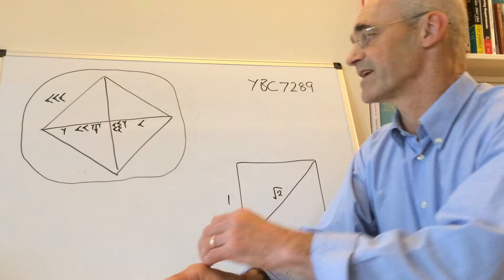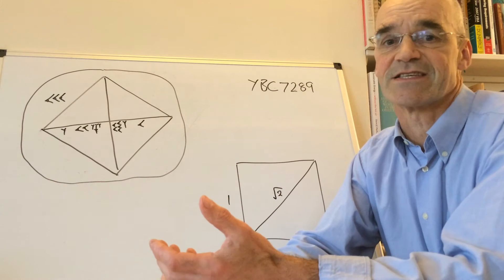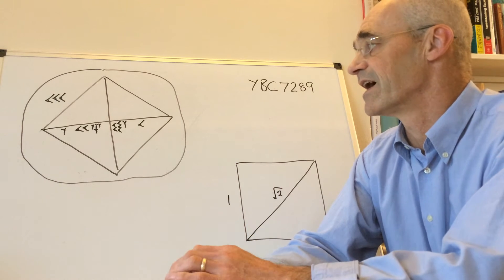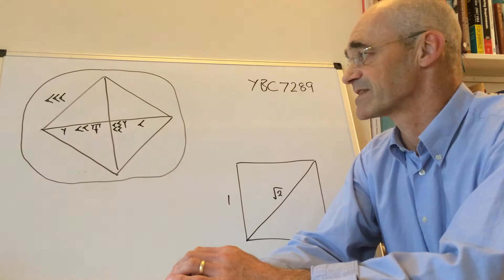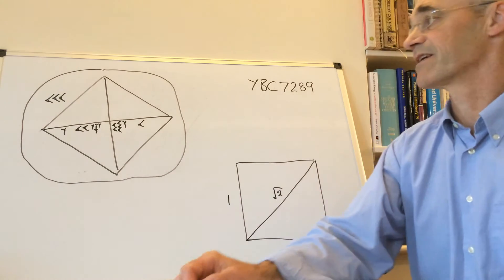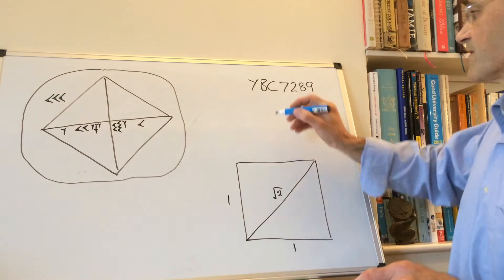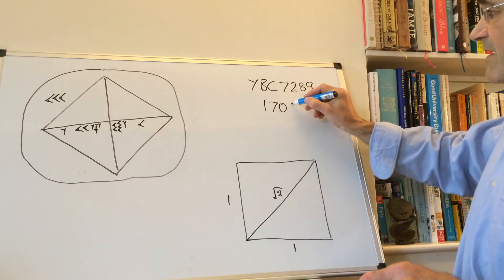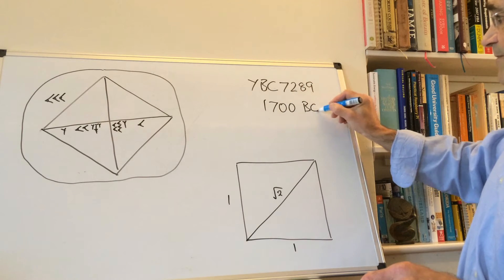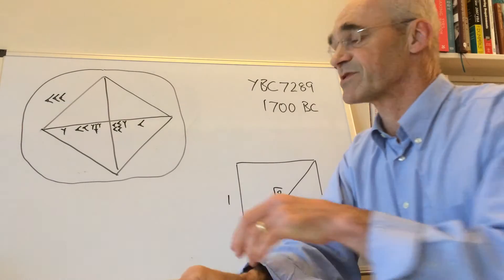It's a clay tablet, an exercise book that a student would have used when they were studying mathematics, and it's nearly 4,000 years old, from about 1700 BC. That's really old.